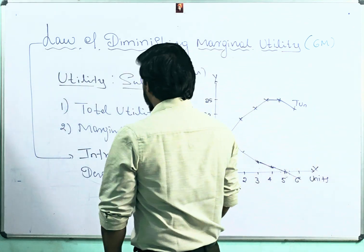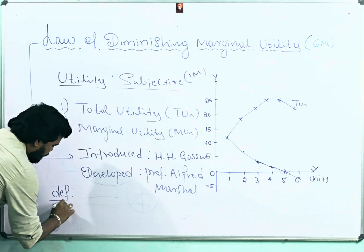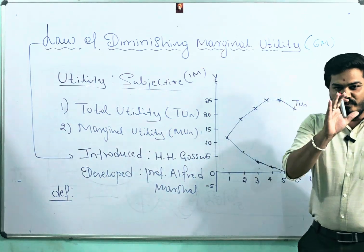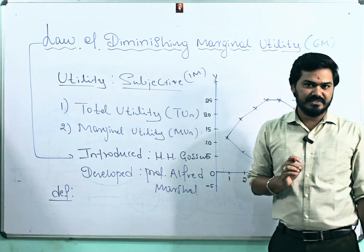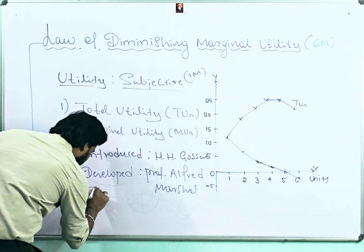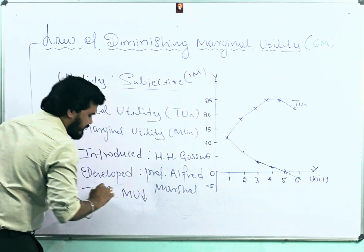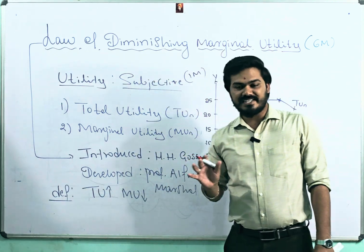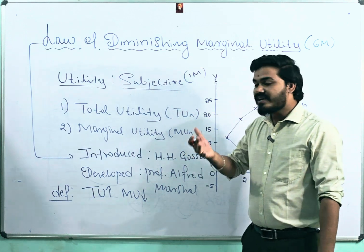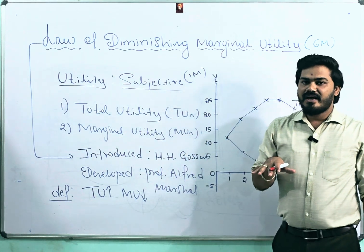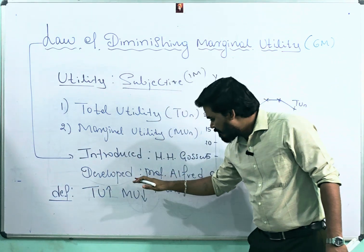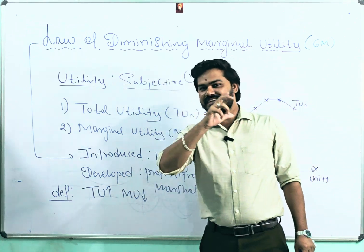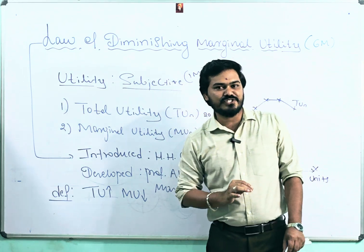Now let's move to the definition. According to Alfred Marshall: if a consumer is consuming one after another units of X commodity, his total utility is increasing and marginal utility is decreasing, and all other things remain constant. I will clarify this definition with the help of an imaginary story and a table.